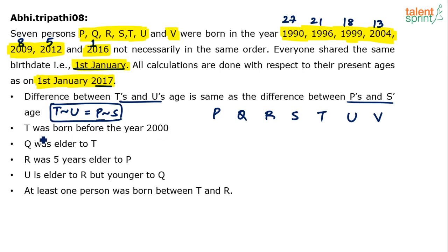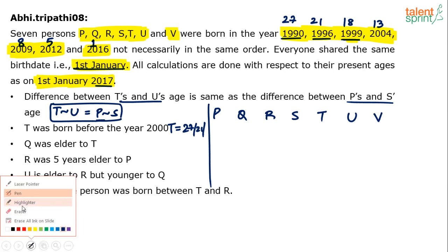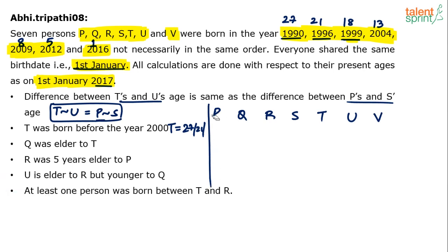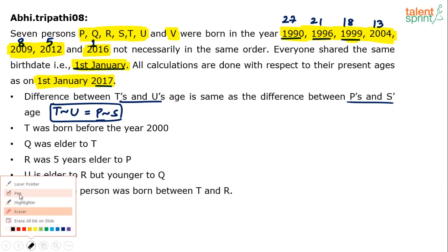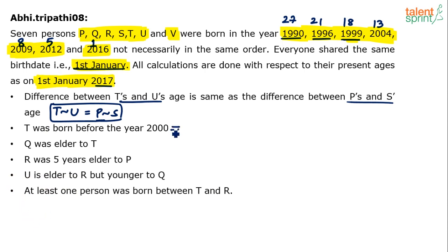Clue 2: T was born before the year 2000. Before 2000, there are only three possible birth years: 1990, 1996, and 1999, corresponding to ages 27, 21 and 18. So T can be 27, 21 or 18 years old.